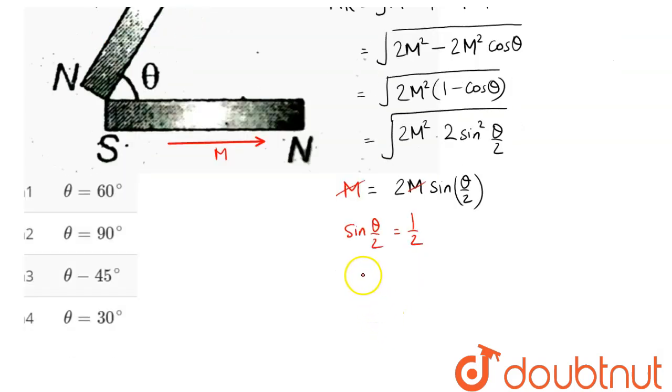Hence value of sin theta by 2 comes out as 1 by 2. So we can say theta by 2 value is equal to 30 degrees, which means value of theta is equal to 60 degrees.